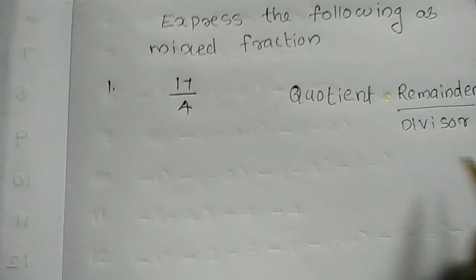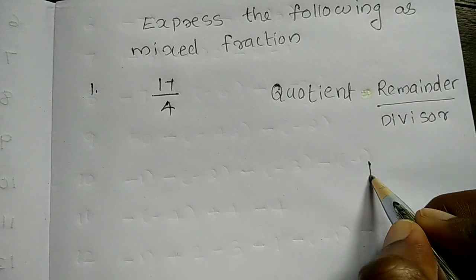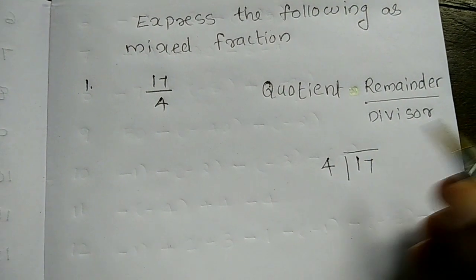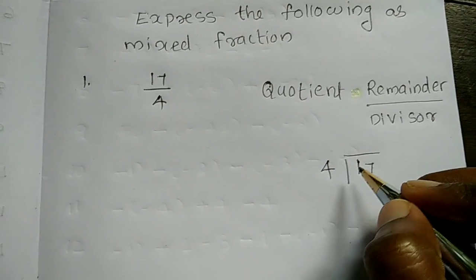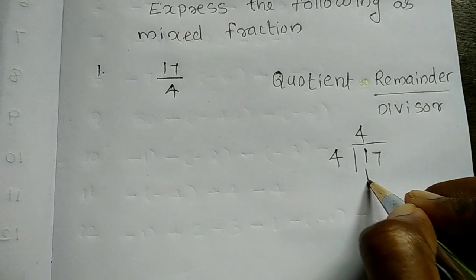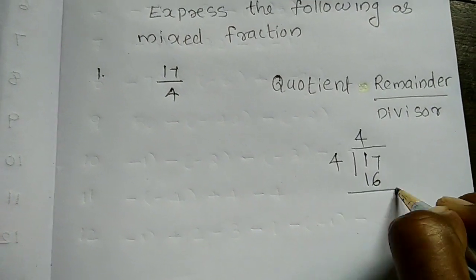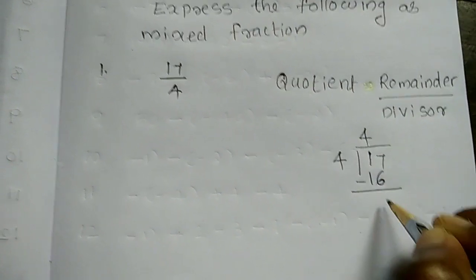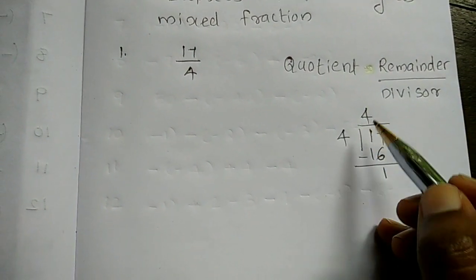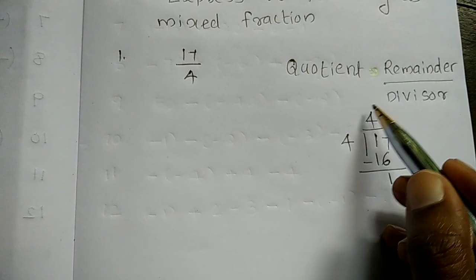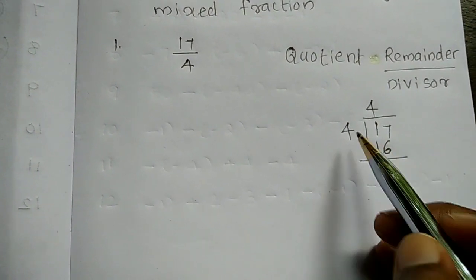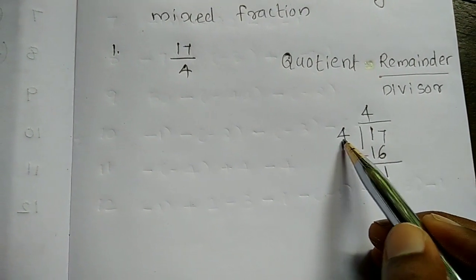Now, let's divide 17 by 4. We divide 17 by 4. The quotient is 4 and the remainder is 1, with divisor 4.